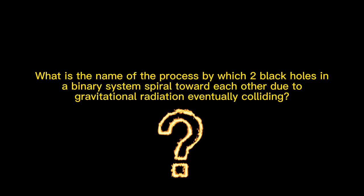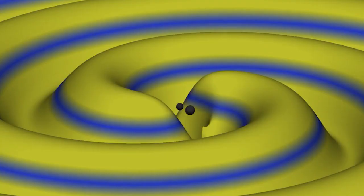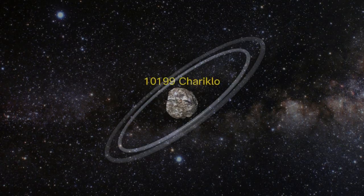What is the name of the process by which two black holes in a binary system spiral toward each other due to gravitational radiation, eventually colliding? Binary coalescence. What is the name of the smallest celestial object with two confirmed rings? 10,199 Chiriclo.